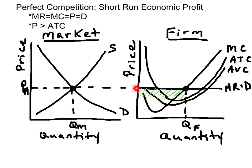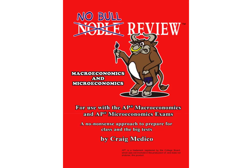If a typical firm earns a short-run economic profit, we can expect more firms to enter the market in the long run. That's how you show a short-run economic profit for a firm graphed next to a perfectly competitive market. In the next video, we'll check out short-run economic losses for a perfectly competitive firm.